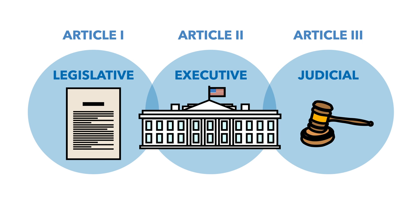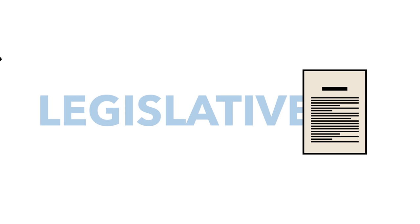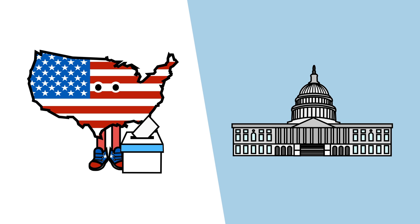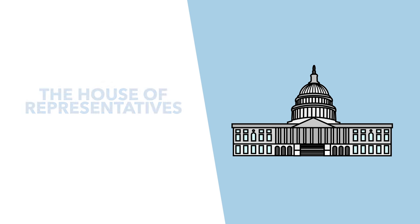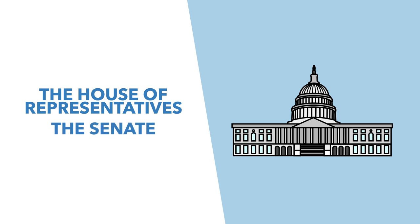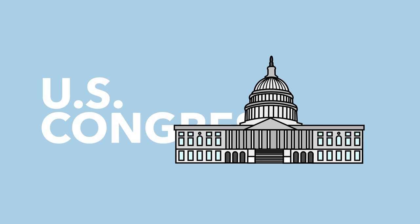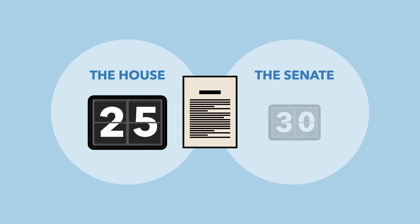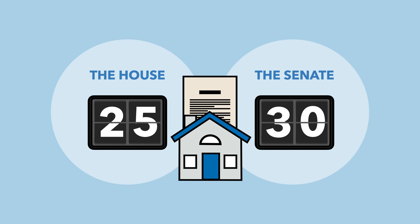Article 1 of the Constitution lays out the legislative branch. Like the UK, the US is a republican democracy, meaning that people elect representatives to make laws for them. In the US, there are two bodies involved in the making of law — the House of Representatives and the Senate — which together make up the United States Congress. The Constitution also lays out the requirements of membership of these houses, such as age: 25 for the House and 30 for the Senate, and residency requirements.